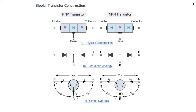Basically, we have two types of transistors: NPN transistor and PNP transistor. In case of NPN configuration, only the base will be in P-type doping, and the emitter and collector will be in N-type. In case of PNP it is the reverse — the base will be N-type and emitter and collector will be P-type.